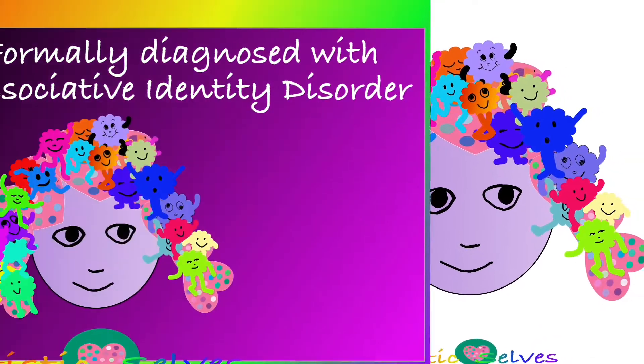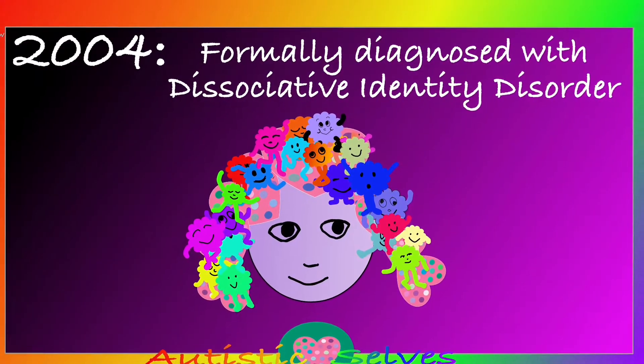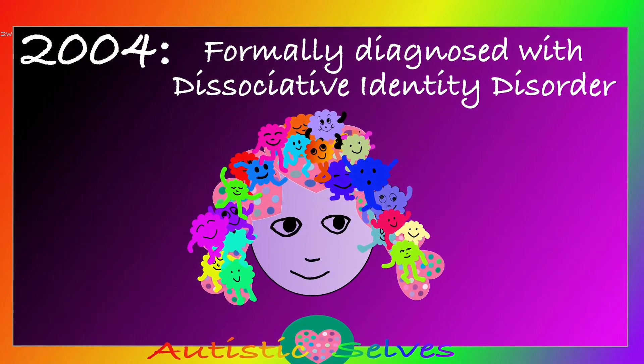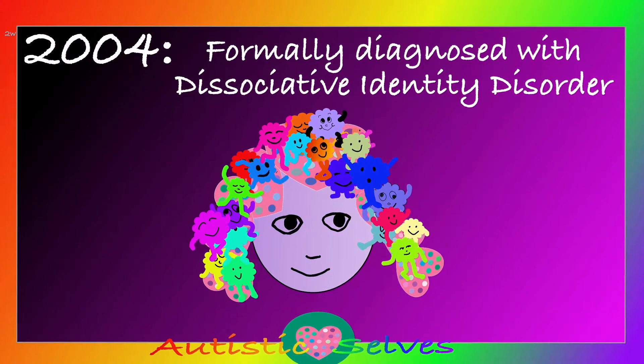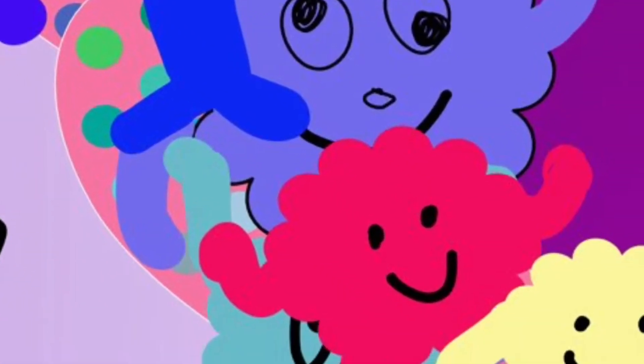We were first diagnosed with DID in 2004 when we were in our late 20s. We are going to quote the five criteria directly from the DSM-5 and then discuss examples from our assessment report to show why we were diagnosed with DID.